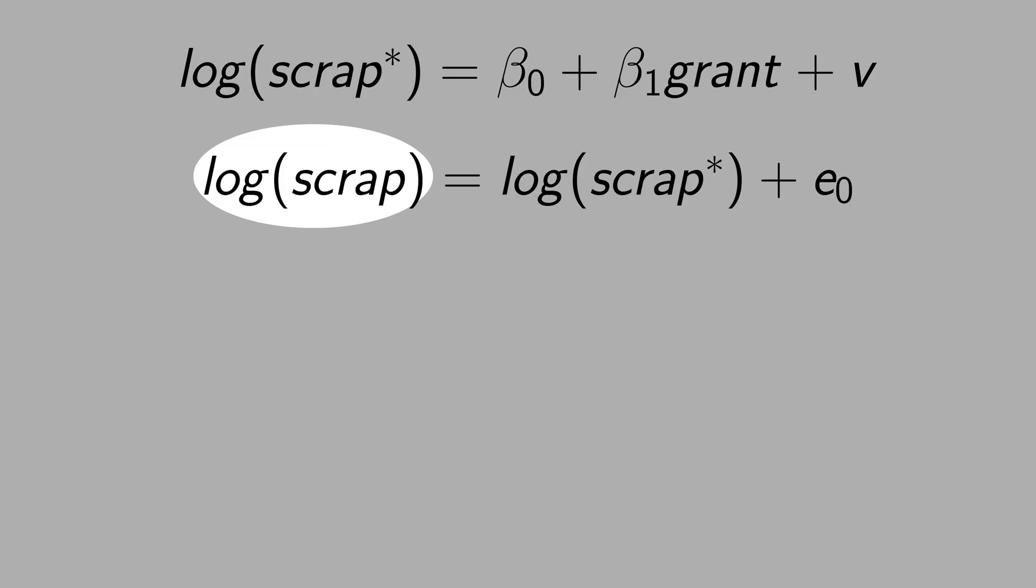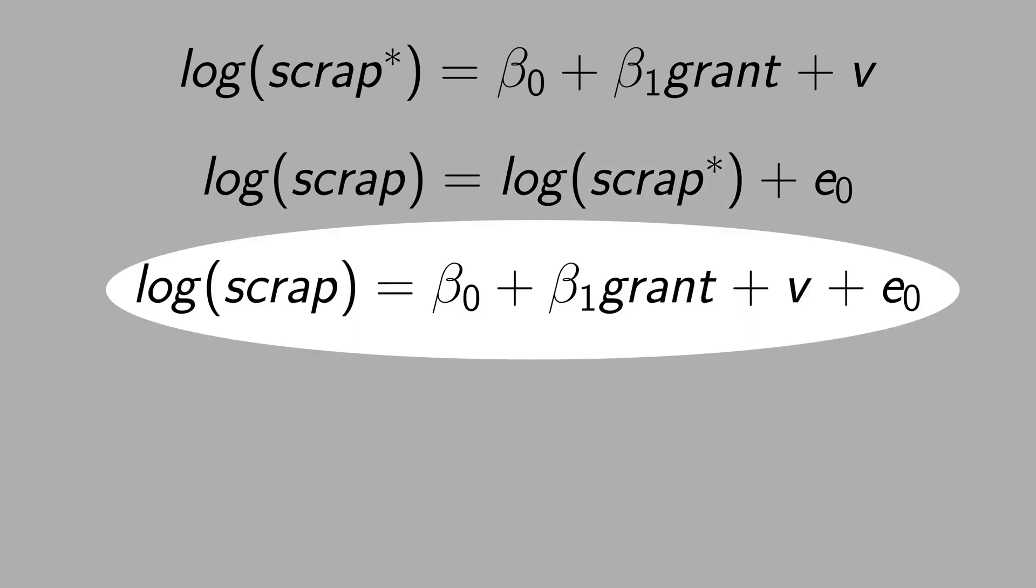But let's assume that the observed scrap is the real scrap plus a measurement error. Then, in practice, this is the regression that you are going to estimate. How did I get this equation here? I isolate the real or actual scrap in this equation here and I plug it in.